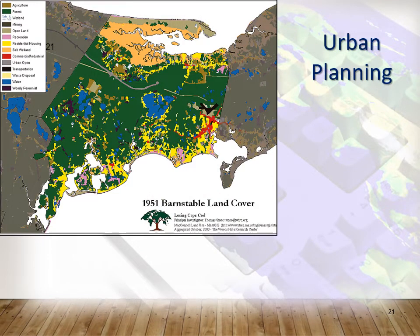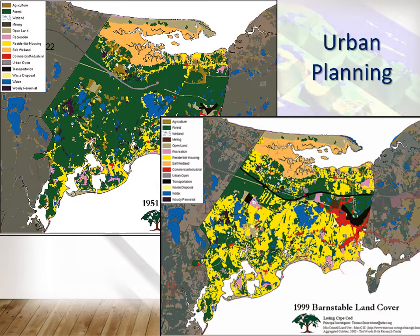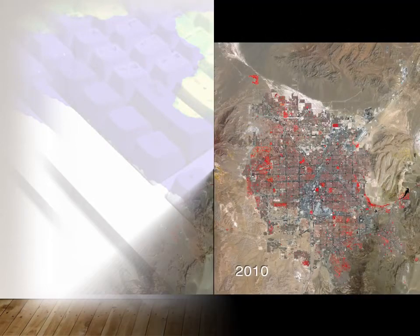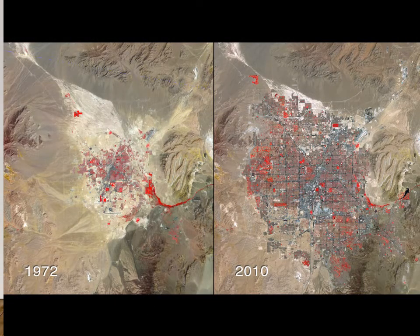Another example is urban planning. This is part of Massachusetts in the Cape Cod area, and we're looking at changes in land use between 1951 and 1999. We could also use satellite images in GIS to compare cities or areas that might be changing. What you're looking at here is the change of the city of Las Vegas from 1972 to 2010. You can imagine, just by looking at this or if you've even been to Vegas, how quickly and how steadily this city is growing.